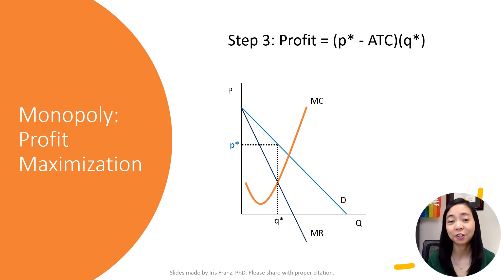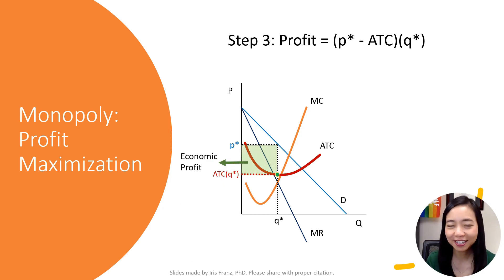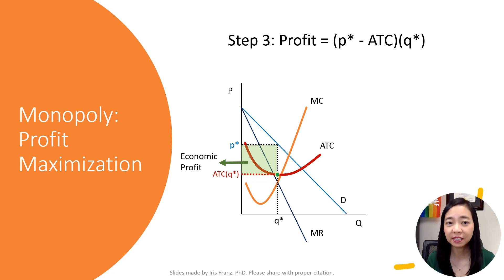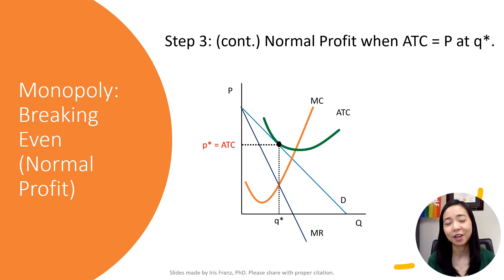Suppose that average total cost ATC is lower than the price at quantity Q star, then we are making an economic profit. The profit is equal to the total revenue minus the total cost, or P star minus ATC times quantity Q star. If given the profit maximizing quantity Q star, ATC is equal to P star, then we're breaking even, or making a zero economic profit, also known as the normal profit.